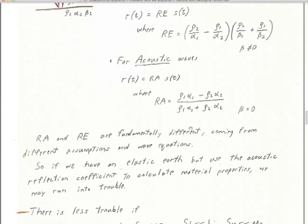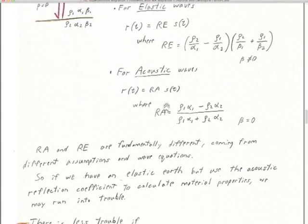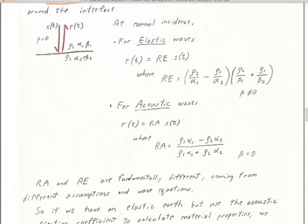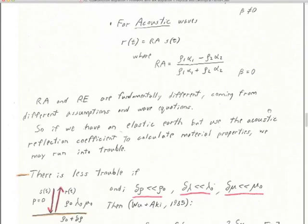For acoustic waves it's easier. But notice the trouble: if we're doing a chirp survey in a lake, in water, and probably in a lot of the mud at the bottom, beta is zero — the S velocity is zero, it's too fluid. Maybe the S velocity is 20 meters per second, but that's ridiculously low, it might as well be zero. Those low S velocities are going to blow up the elastic reflection coefficient. For an actual fluid with zero S velocity, it just doesn't work. So here's the old familiar acoustic wave reflection coefficient R_A.